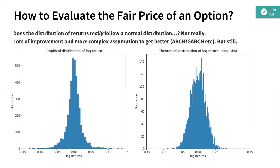From an untrained eye it might not seem like much. If you look at the log returns here on the left, it does look like a Gaussian, but when you really simulate this GBM given the volatility — if you parametrize just by this — you actually have something a bit different.